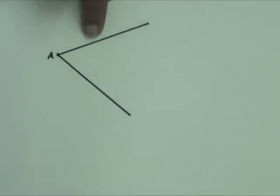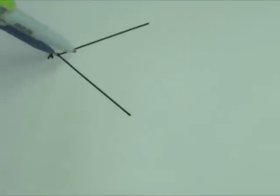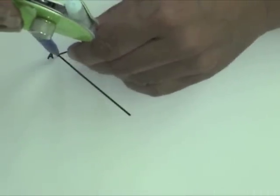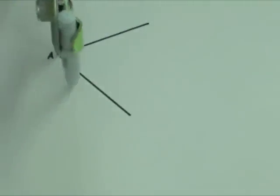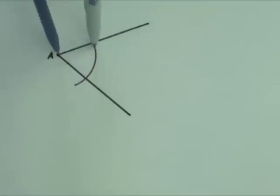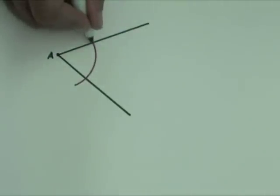Here is the angle A that we're going to bisect. Place the compass point on A and draw an arc that intersects the sides of angle A. Label the points of intersection as B and C.